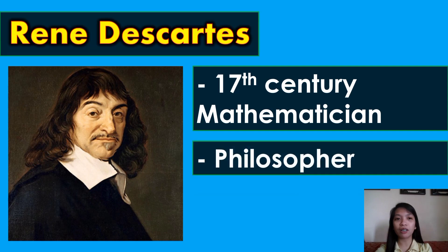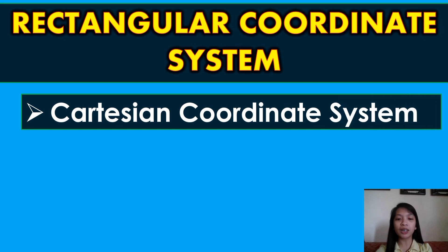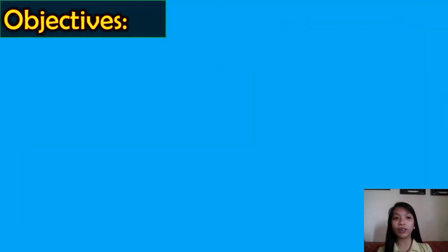The idea of describing a point on the plane was systematized by the 17th century mathematician and philosopher René Descartes. This system is called the rectangular coordinate system. As a tribute to the greatness of Descartes' invention, succeeding mathematicians and mathematics historians called this system the Cartesian coordinate system, from his surname. It is also called the Cartesian coordinate plane or the XY plane.